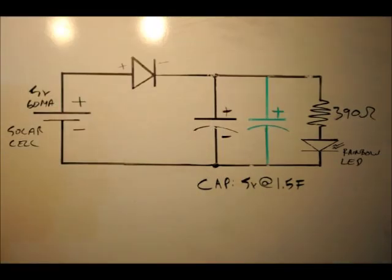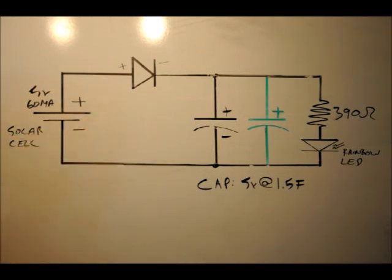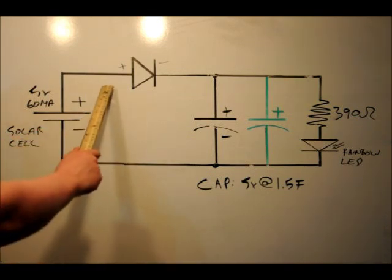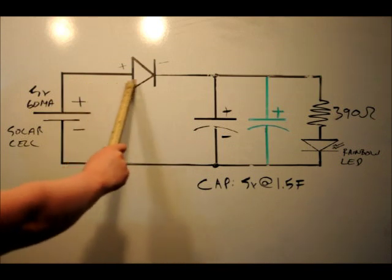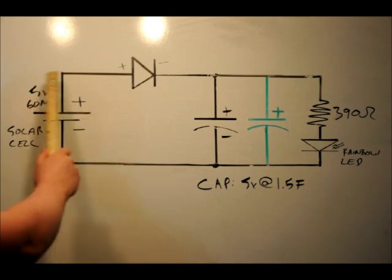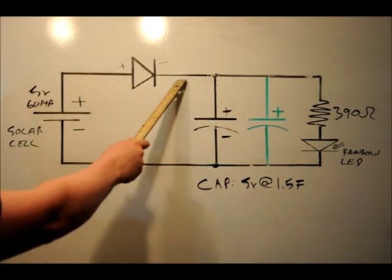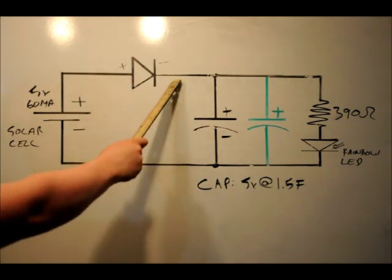So what we have here is a 5 volt, 60 milliamp solar cell. Again, you don't have to use that specific cell. It doesn't really matter because we've got our diode right here, our 1N4001 diode. And what that acts to do is to allow for current to flow from the solar cell to the capacitor. But when there's no sunshine, make sure that the power stored on the capacitor does not flow back through the diode. It's a one-way street for power.